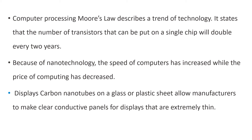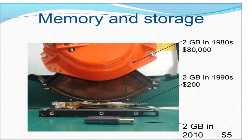Carbon nanotubes displayed on a glass or plastic sheet allow manufacturers to make clear conductive panels for displays that are extremely thin. When comparing memory and storage devices in the 1980s and 2010, we have seen that the size and price of the device has reduced so much. In the 1980s, for a 2GB memory and storage device, the price was about $80,000. But in the 1990s, for a 2GB memory and storage device, it was only $20,000.